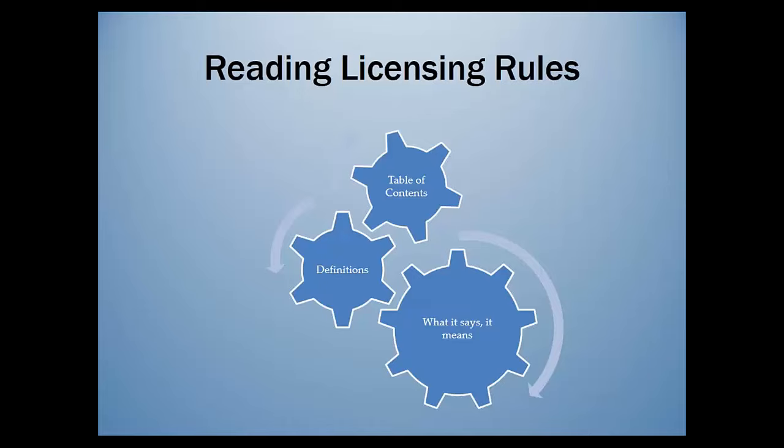Now let's focus on the definition section specifically, which is a really important section within this regulation. In the registered home regulations, there are currently 24 definitions — in this new set, there are 57, so we've more than doubled them. A couple of key things: if you can look the word up in the dictionary and that's the definition we're using, then we didn't purposely put it in this section. If you couldn't look the word up in the dictionary and fully understand it because we're using it in a way unique to this profession, those are the words we tried to capture and write in this definition section.